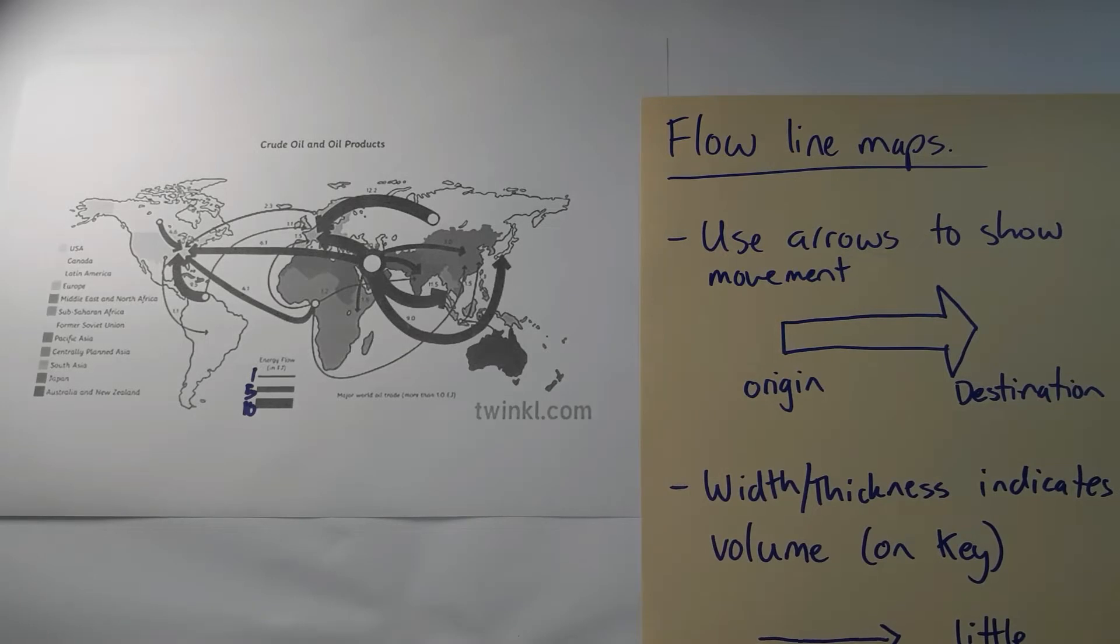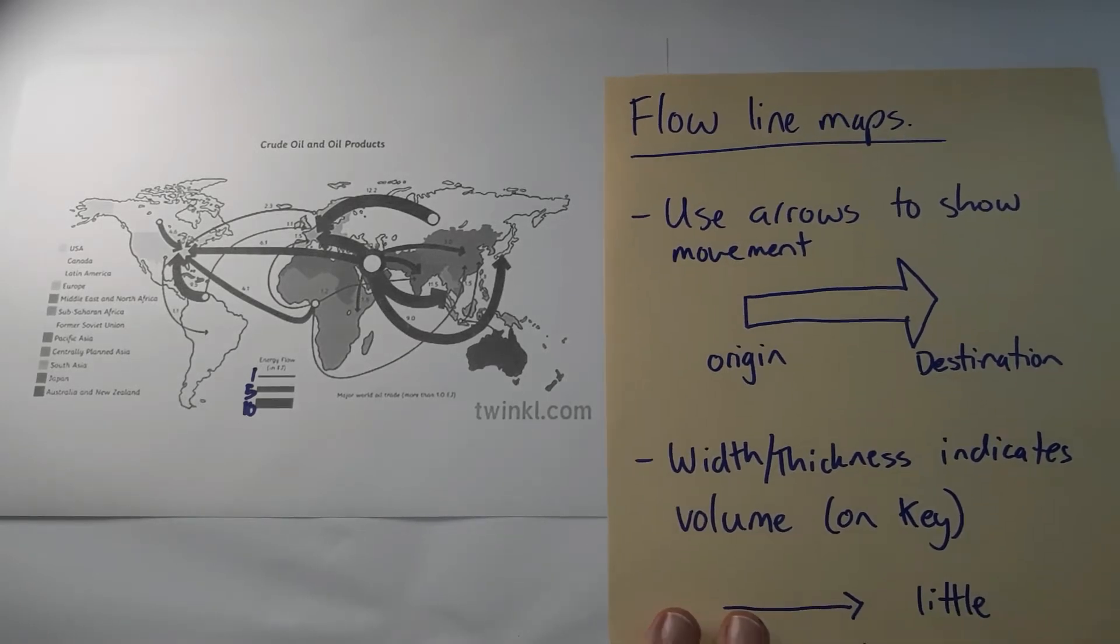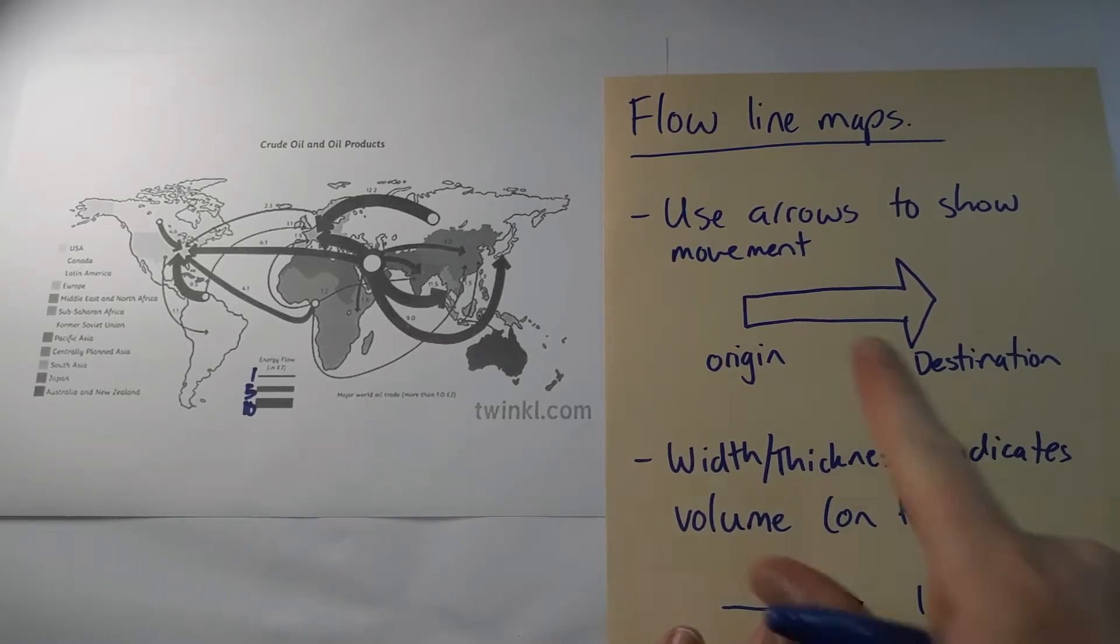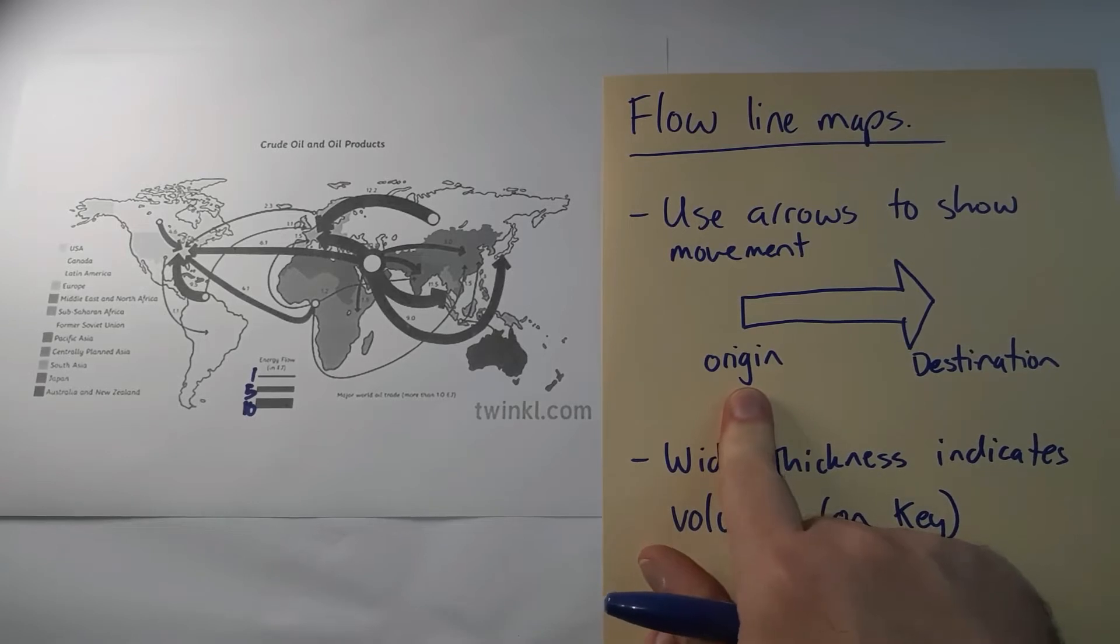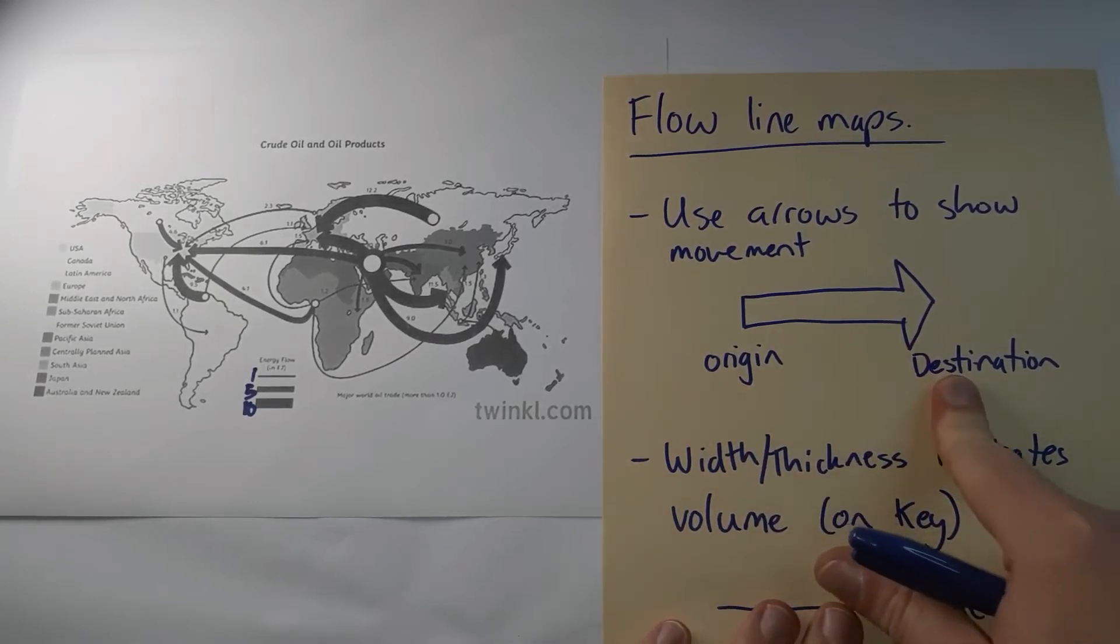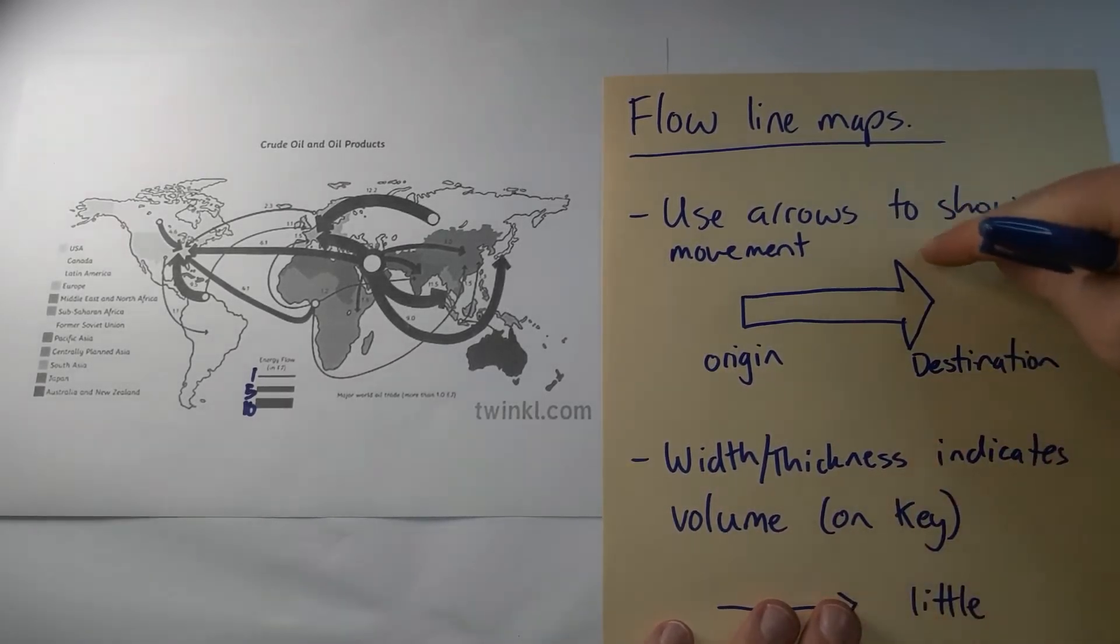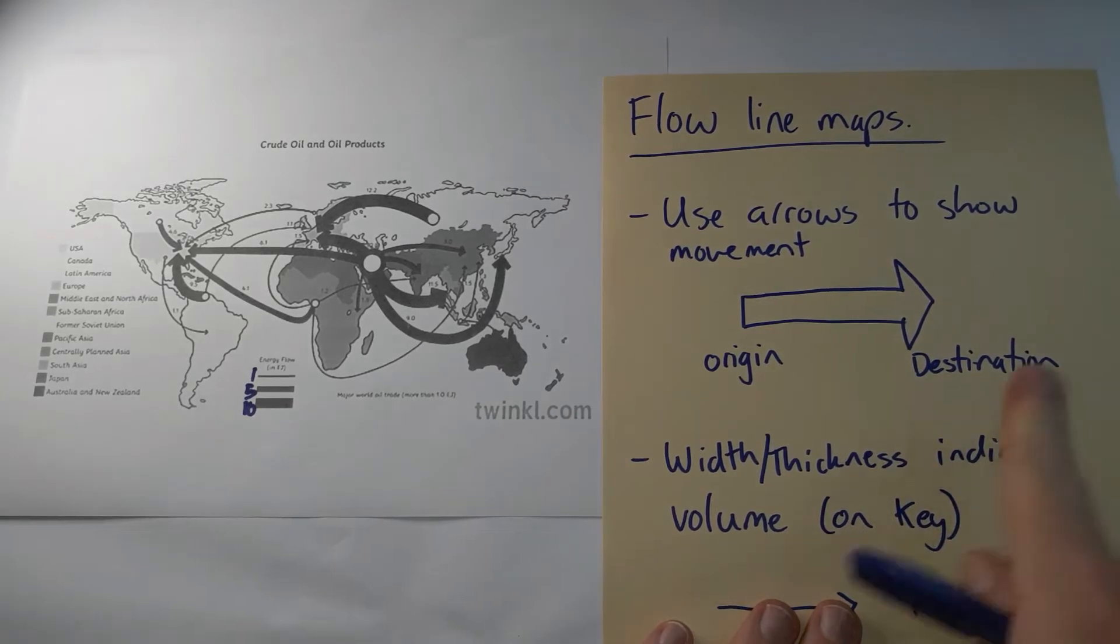Arrows. Arrows show the movement of something. It could be goods, services, people, money, anything moving from one location to another. The arrows show the origin where that movement starts and the destination where it ends. You'll see the arrowhead on the destination pointing towards the movement of that flow.